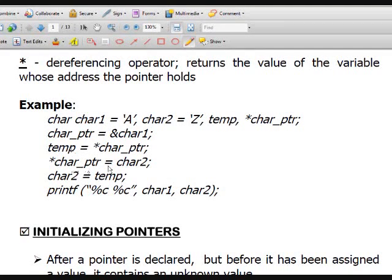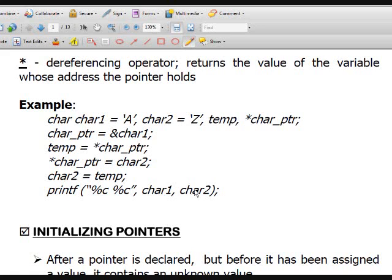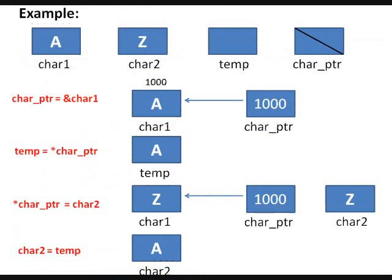The value stored in char2 will overwrite the value pointed by charptr. Then the value stored in temp will overwrite the value stored in char2. Finally, we output the values stored in char1 and char2. To make it clear, let's dissect each line one by one. We have four variables: char1 has value 'a', char2 has value 'z', temp initially has no value, and charptr contains null because it doesn't point to anything yet.